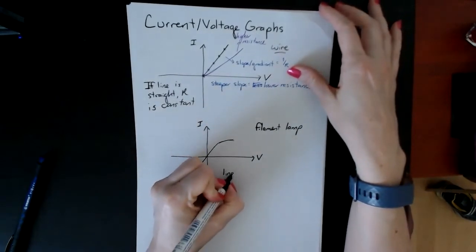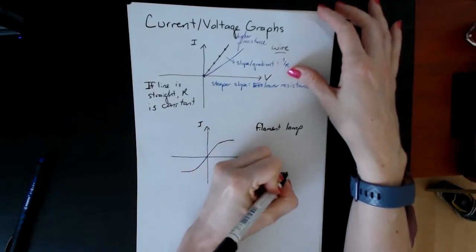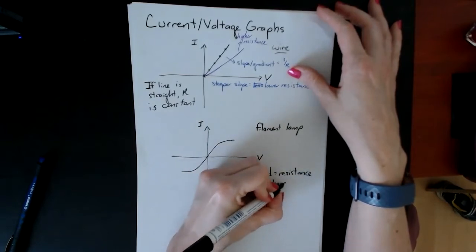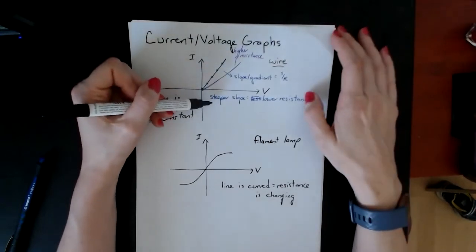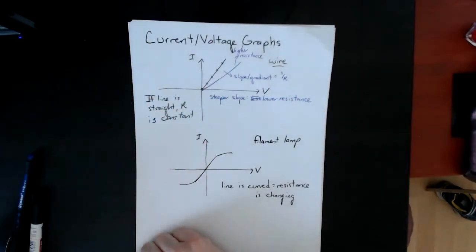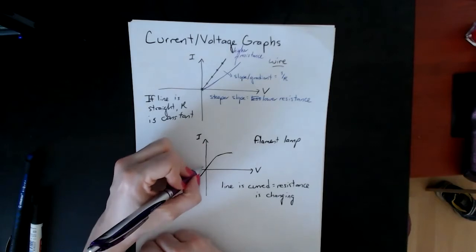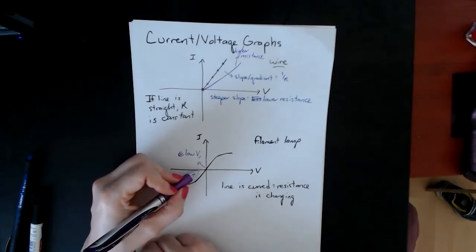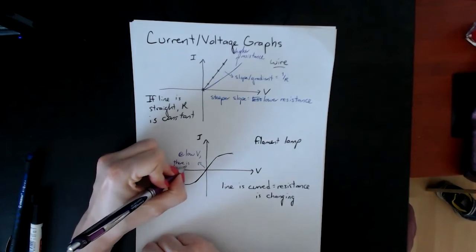The line is curved, and that tells you the resistance is changing. Based on this idea that the steeper the slope, the lower the resistance, you can see that here in the middle when the voltage is not high—at low voltage, whether positive or negative—you have quite a low resistance.